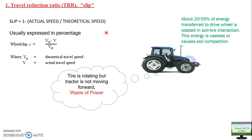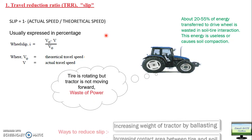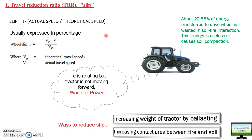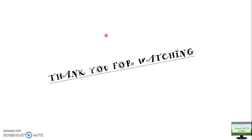Slip is the scenario where the tire is rotating but the tractor is not moving forward — it is a waste of engine power. Research shows that about 20–55% of energy of the drive wheel is wasted in soil-tire interaction or tire slippage, and this wasted energy causes soil compaction. It is important to reduce slip, but making slip zero is not advisable since some slip is required to generate pull. To reduce slip: increase tractor weight by ballasting at the front and rear, or increase tire footprint area by deflating the tire or using a larger tire size.